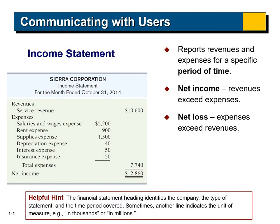Let's take an example on the income statement. The income statement shows the revenues, the expenses, and the net income or net loss of a company. In this example we have the income statement of Sierra Company. In the title we have Sierra Company, and we mention that it is an income statement for the month ended October 31, 2014. First we list all revenues, then all expenses, and then we find the net income or net loss.